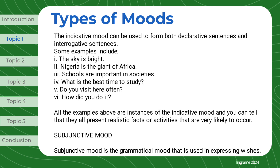Some examples of indicative mood include: 'The sky is bright,' 'Nigeria is the giant of Africa,' 'Schools are important in societies,' 'What is the best time to study?' 'Do you visit here often?' and 'How did you do it?' All these examples are instances of the indicative mood, and you can tell that they all present realistic facts or activities that are very likely to occur.